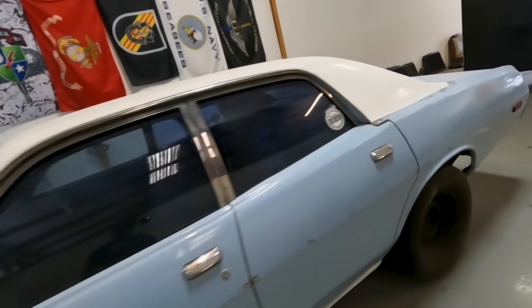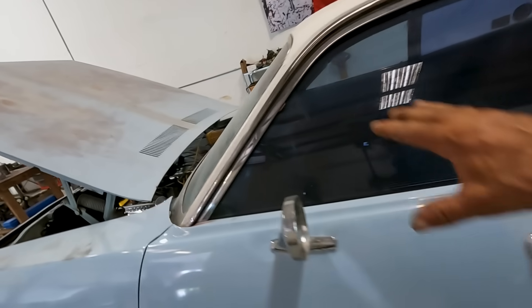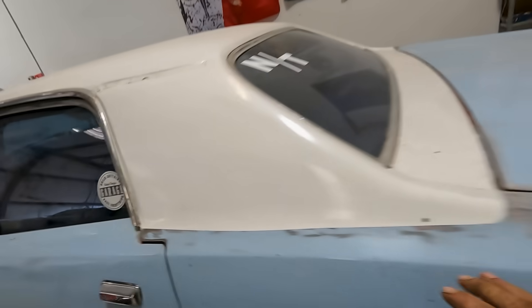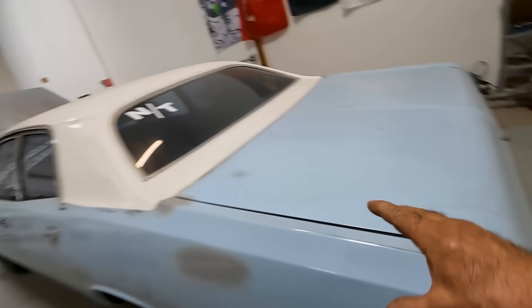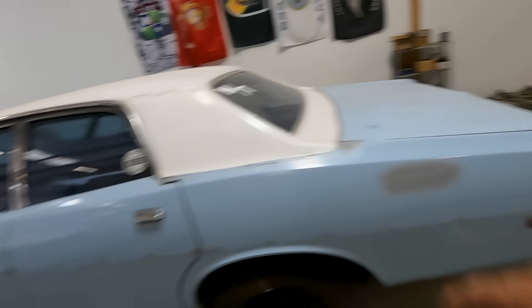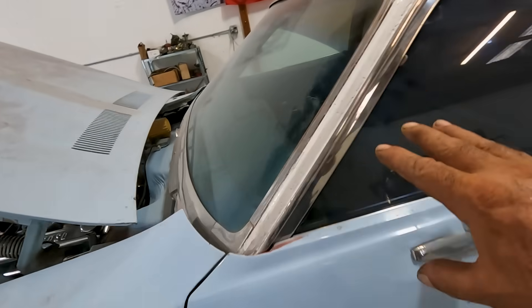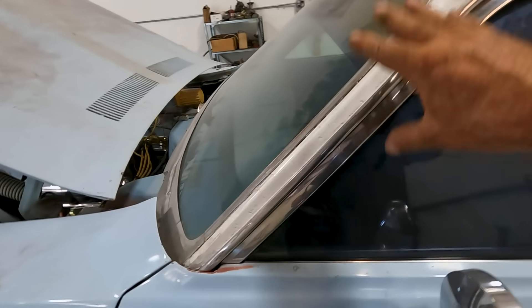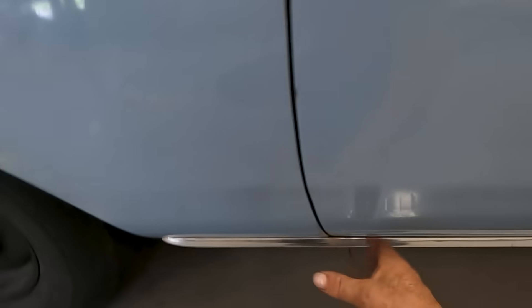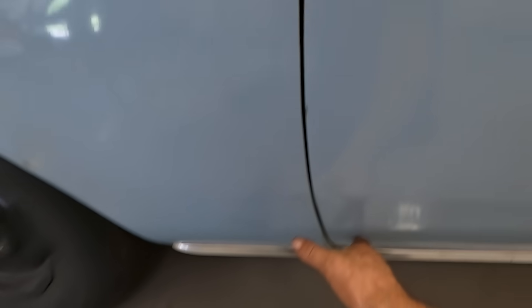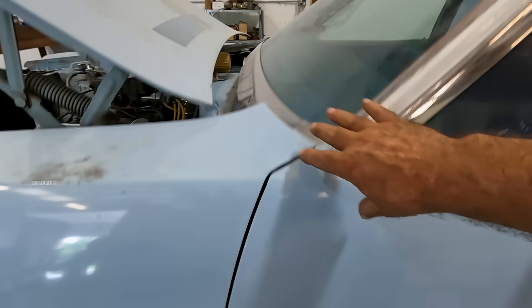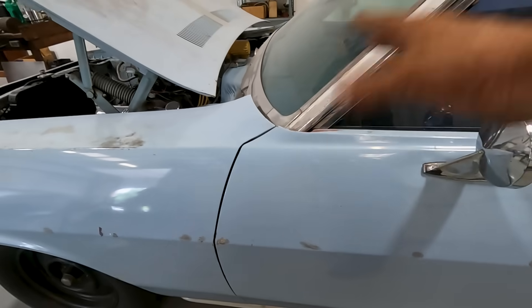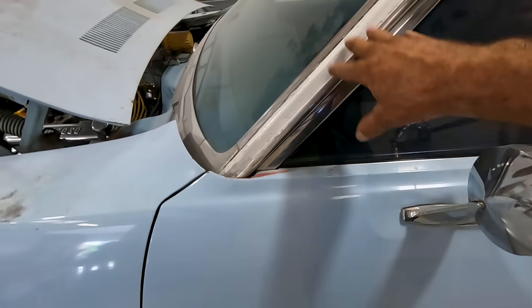The roof structure is generally defined by the pillars: A pillar, B pillar, C pillar, and on a station wagon, D pillar — always in alphabetical order front to back. What's misunderstood is that the A pillar isn't just the visible part the windshield fits to; it's also extended down to the frame. Pillars can be defined as any structure of the car that comes up from the frame — this includes the hinge pillar, which is part of the A pillar assembly.